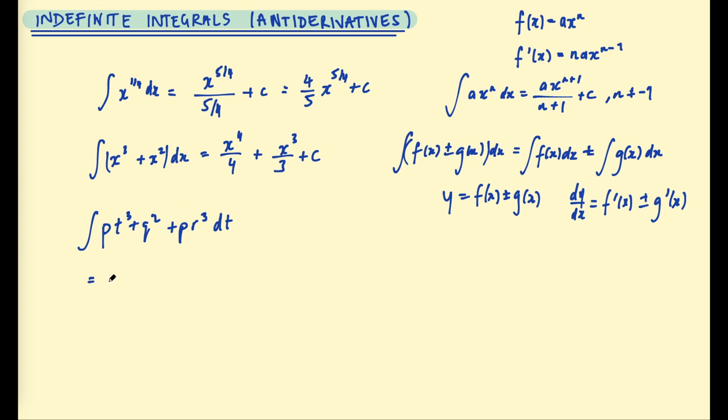So here we are going to get p t to the power of 4/4 plus q squared t. When we don't have a t, we pretend there's a t to the power of 0 here, which is just 1. So we add 1 to that and we get t, and the last term is pr cubed t plus c.